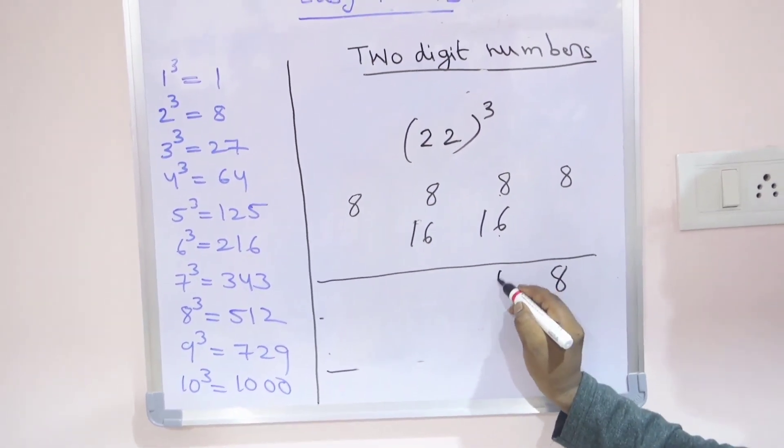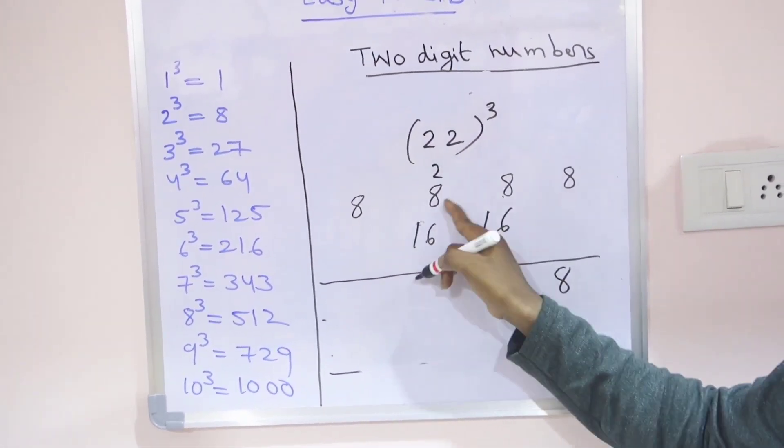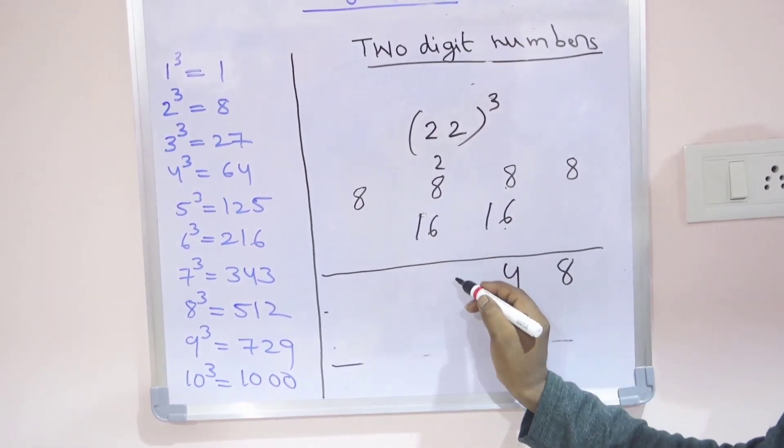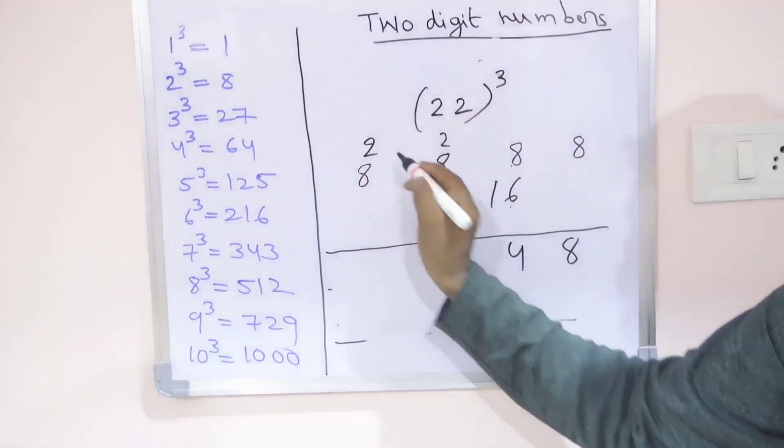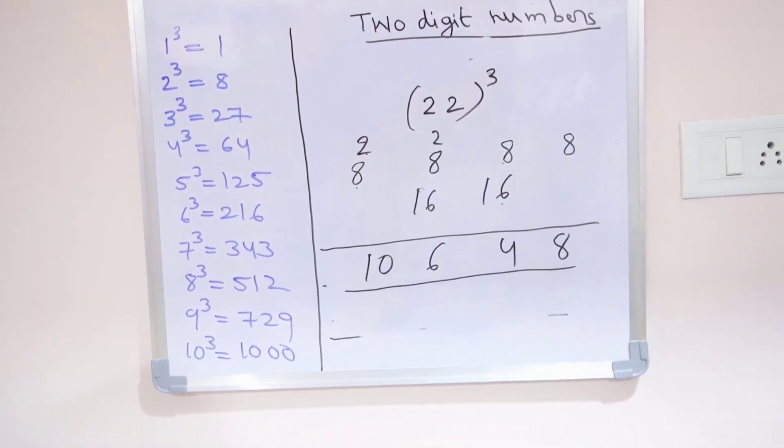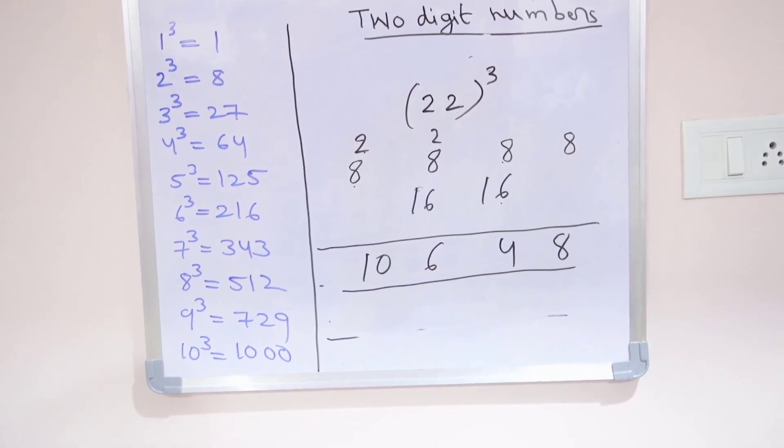First write 8 here. 16 plus 8 is 24, which means 4, carry 2. 8 plus 2 is 10 now, 10 plus 16 is 26, write 6, carry 2. 8 plus 2 is 10 now. So 10648 is the cube of 22.